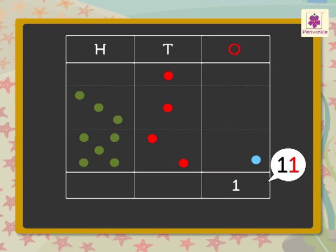So, we get 1 one. Now, add the tens. That is, 1 red dot plus 1 red dot plus 2 red dots is equal to 4 tens.